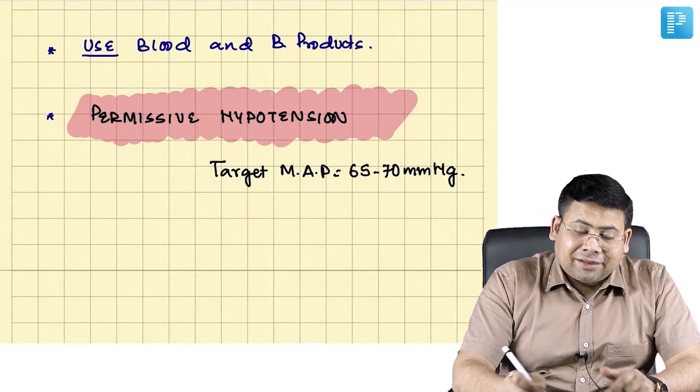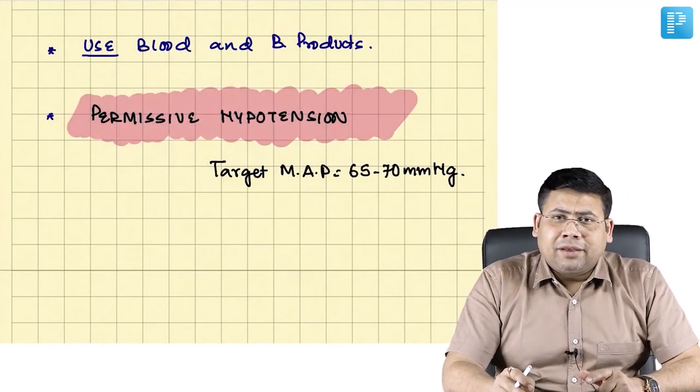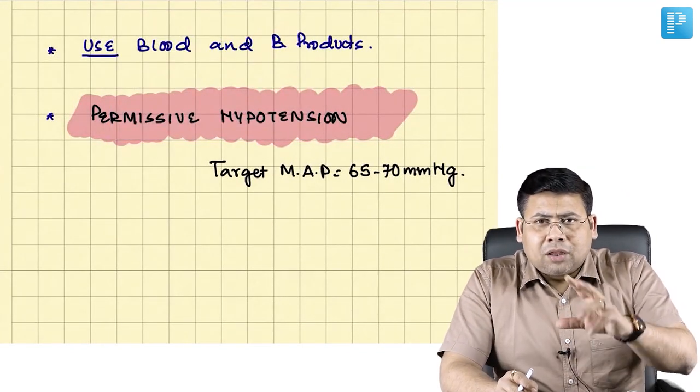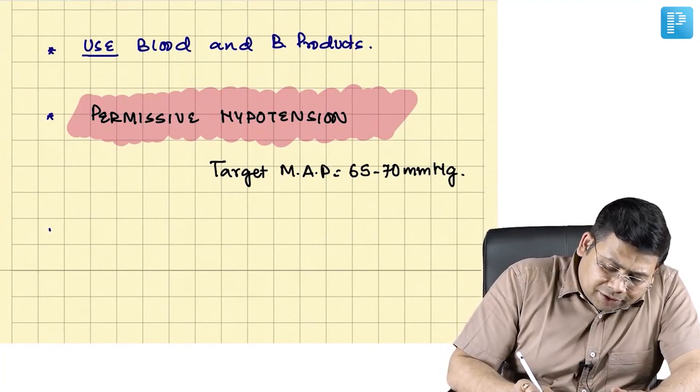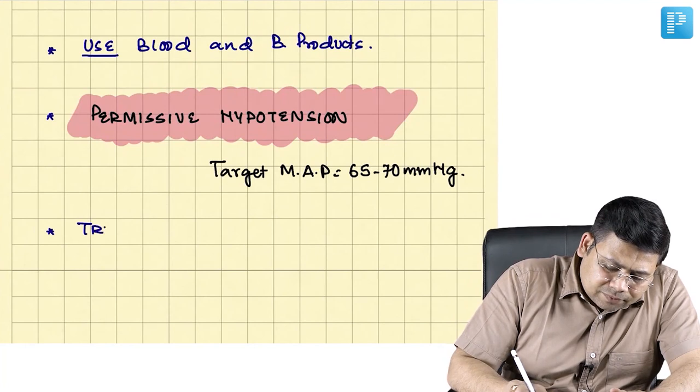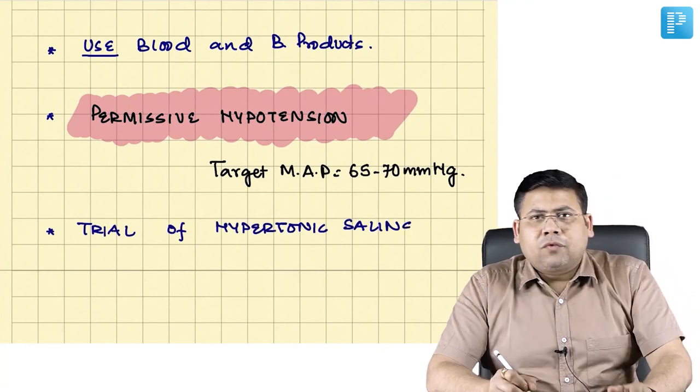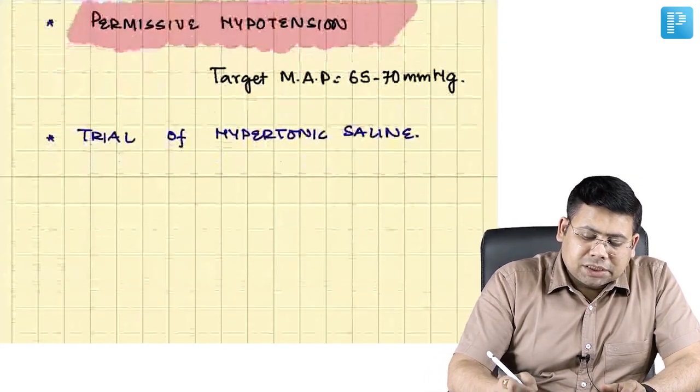A very important thing is rather than using 6 liters of normal saline, use 3% normal, that means hypertonic saline. So always go for a trial of hypertonic saline.